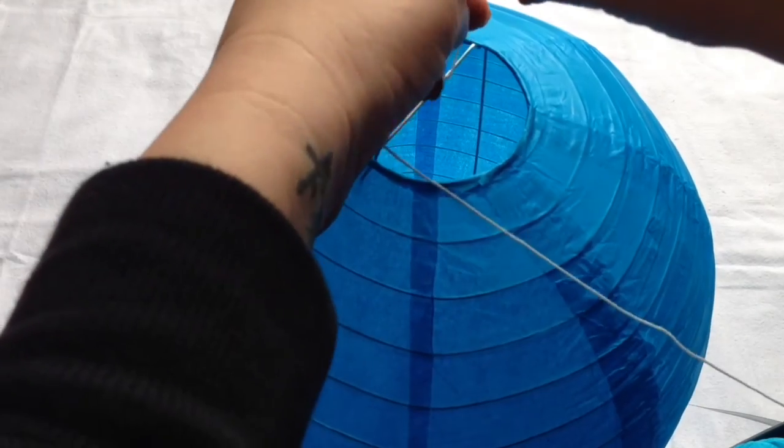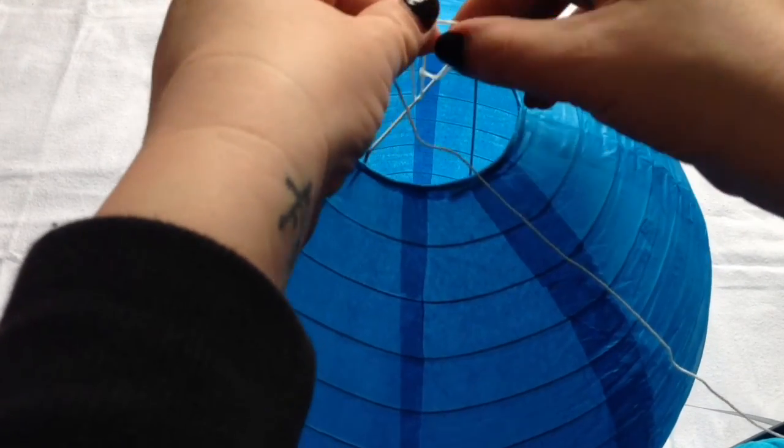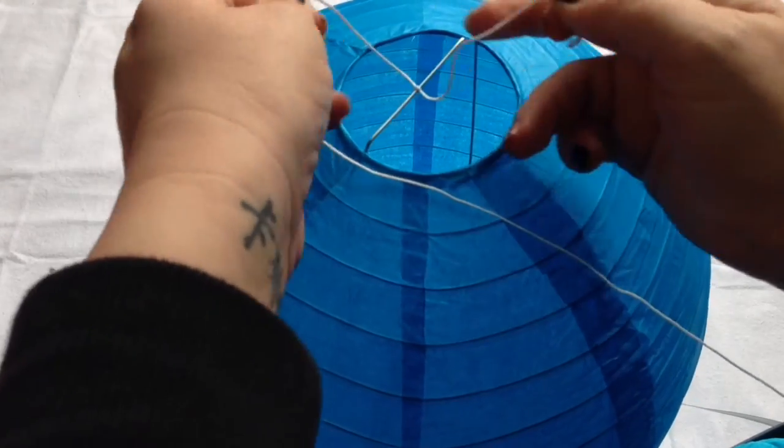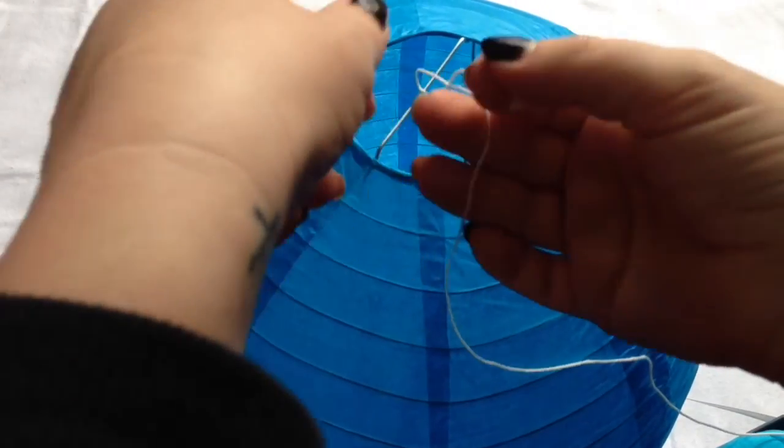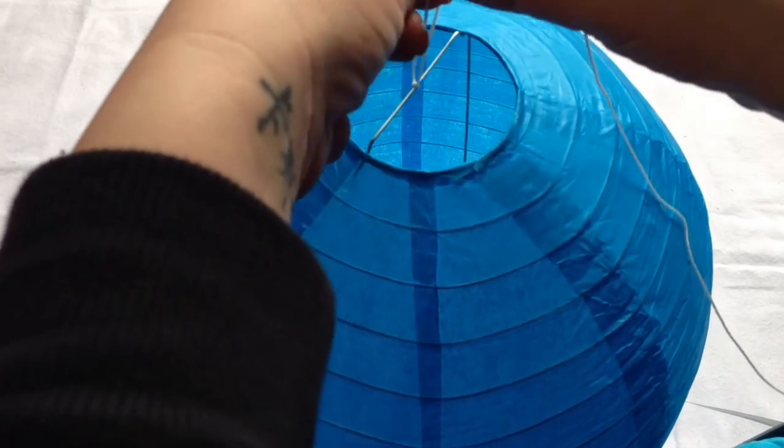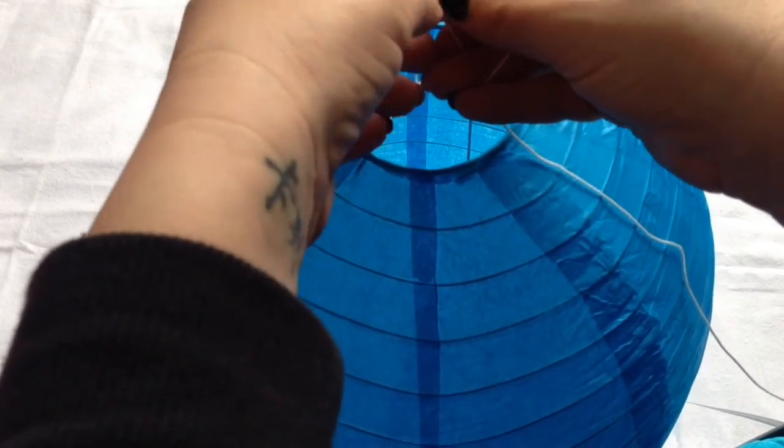You could do this however you find it's easiest, but I just tied mine in the middle of that bar there, just double knotted it. You could super glue or hot glue it in place so that it doesn't slide around, but mine has seemed to stay okay.